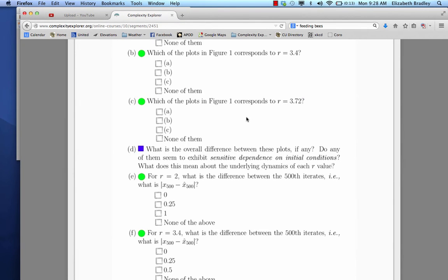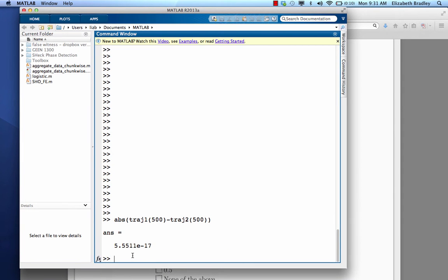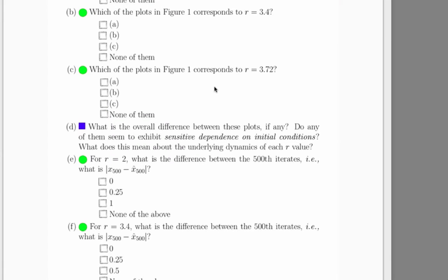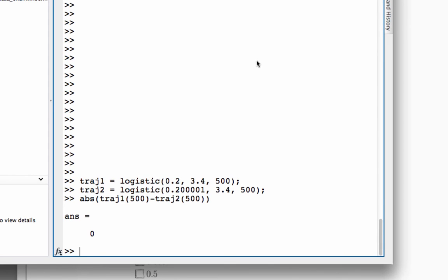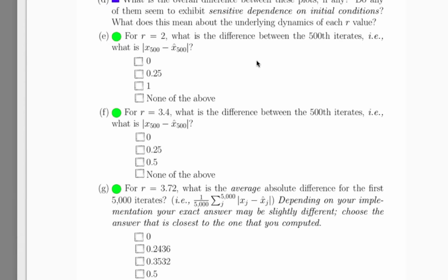To answer problem E, you need to generate two trajectories 500 points long, with slightly different initial conditions, and look at the last number in each of those trajectories. There are the two trajectories. Looks pretty small to me. The choices in the problem were 0, 0.25, 1, and none of the above. 10 to the minus 17th is pretty darn close to zero, so I would select the first answer. In part f, the idea was to repeat that for r equals 3.4. There's the calculation, and again, it looks like the answer is zero.